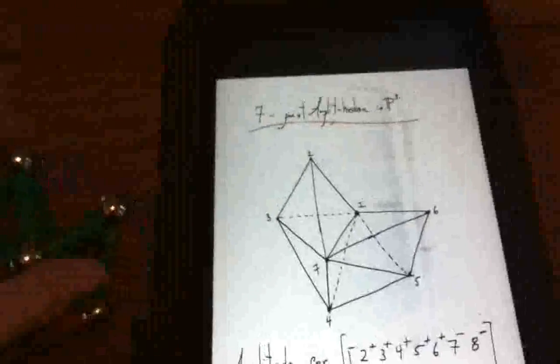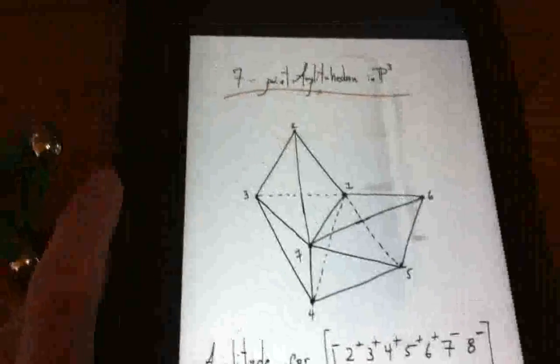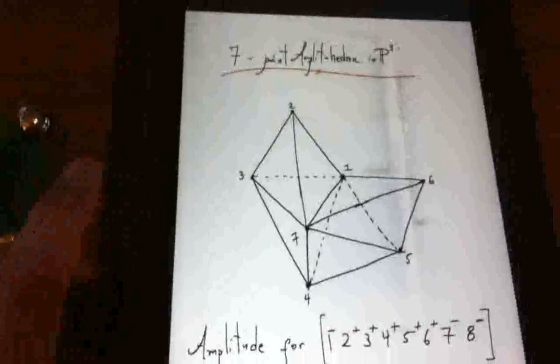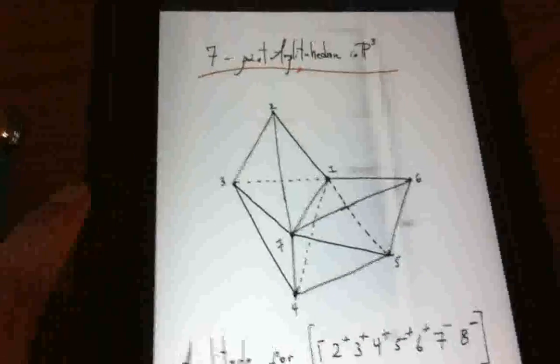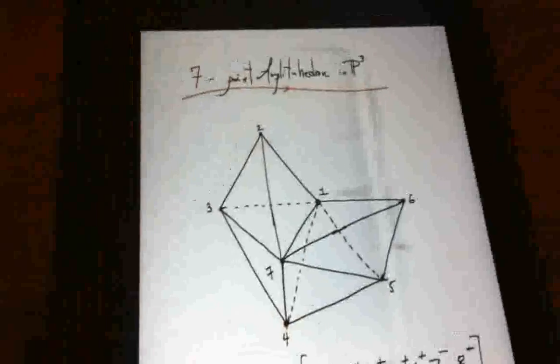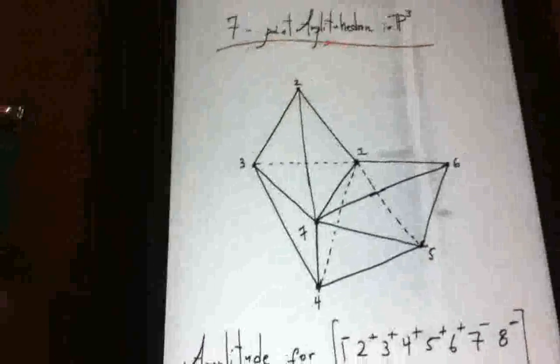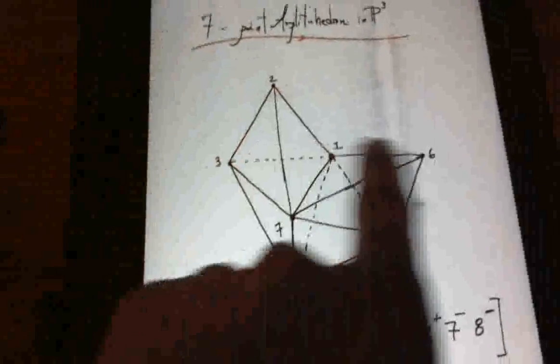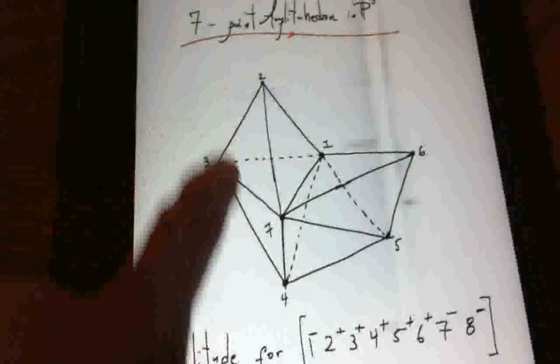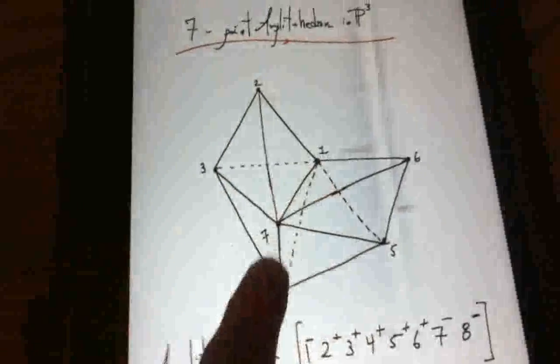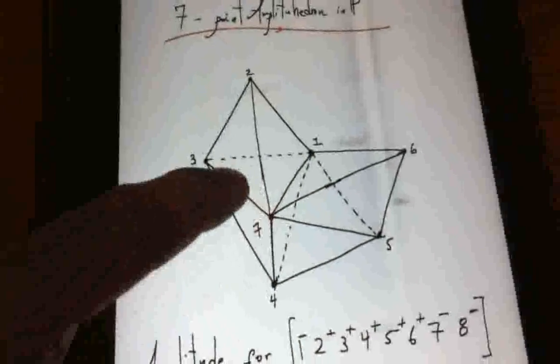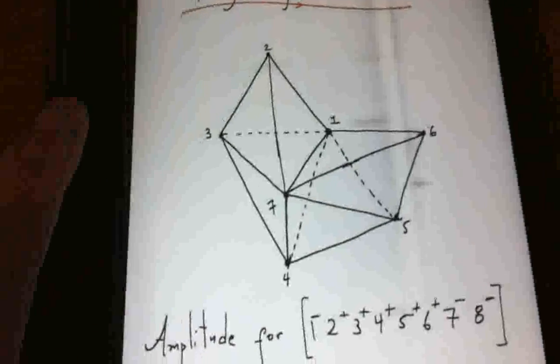Okay, this video is to show you that the amplituhedron is not actually a partial geometric structure of the star tetrahedron. It appears that it is from the angles that it sits at on the drawing originally created by the discoverers of the amplituhedron.